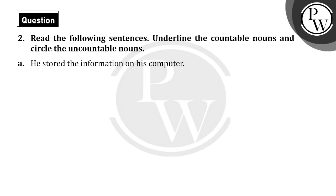Hello students, let's read the question. Read the following sentence, underline the countable nouns and circle the uncountable nouns. Now we have a sentence. What do we have to do? Countable nouns we have to underline, and uncountable nouns we have to circle.